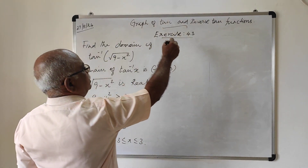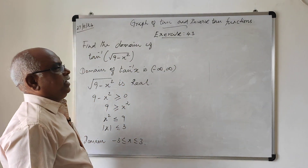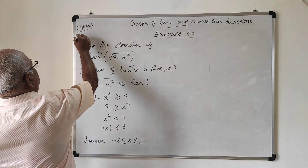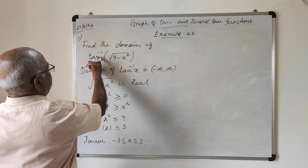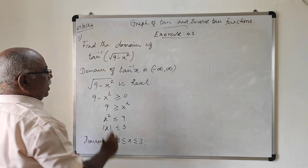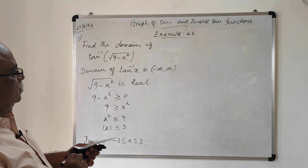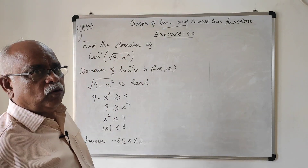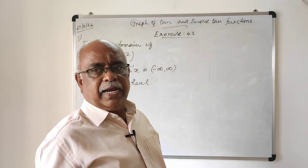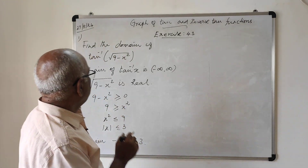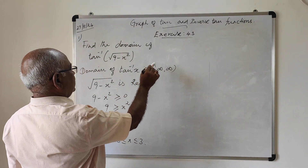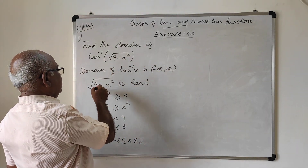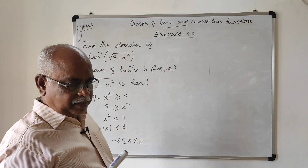Now we are going to solve some problems in Exercise 4.3. The first problem is: find the domain of the function tan⁻¹(√(9 - x²)). We know that the domain of inverse tan is the real line, that is minus infinity to plus infinity. So the domain of tan⁻¹(x) is the real line.